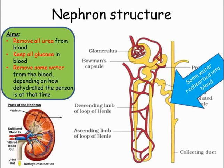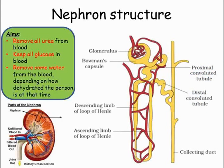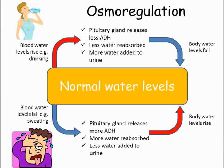The amount of water reabsorbed at this stage is controlled by a hormone called ADH, which is released by the pituitary gland in the brain depending on how much water there is in the blood. If water levels are high, less ADH is produced, meaning little water is reabsorbed. This means more water is added to the urine, lowering water levels in the blood back to normal levels and producing a higher volume of urine.